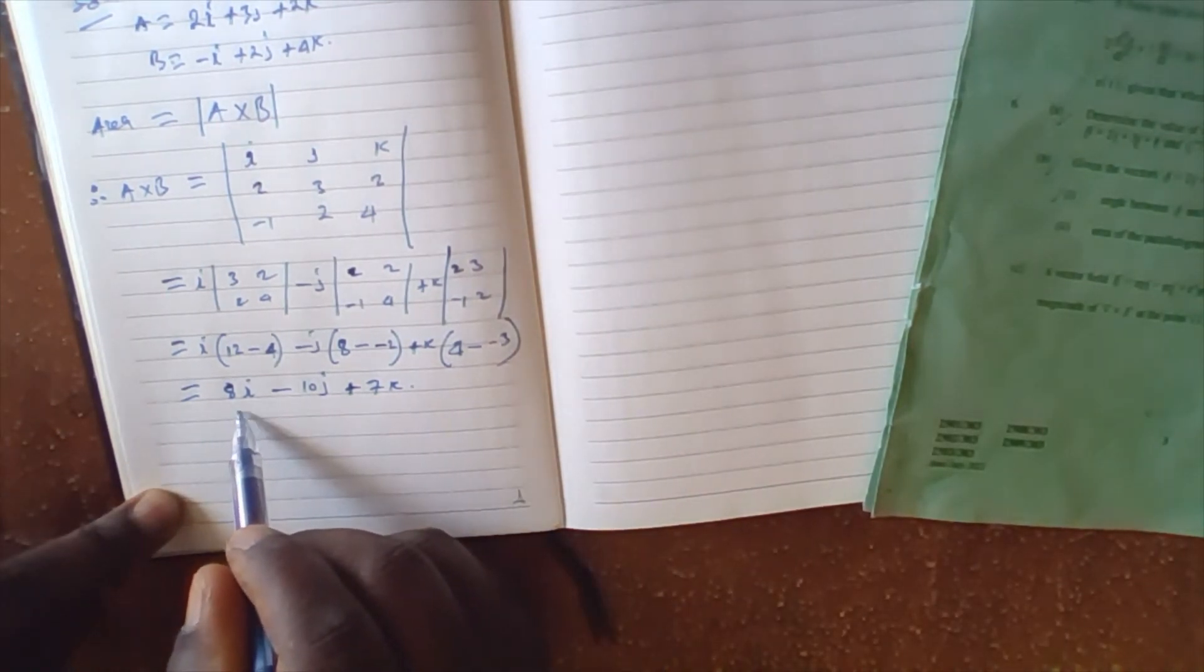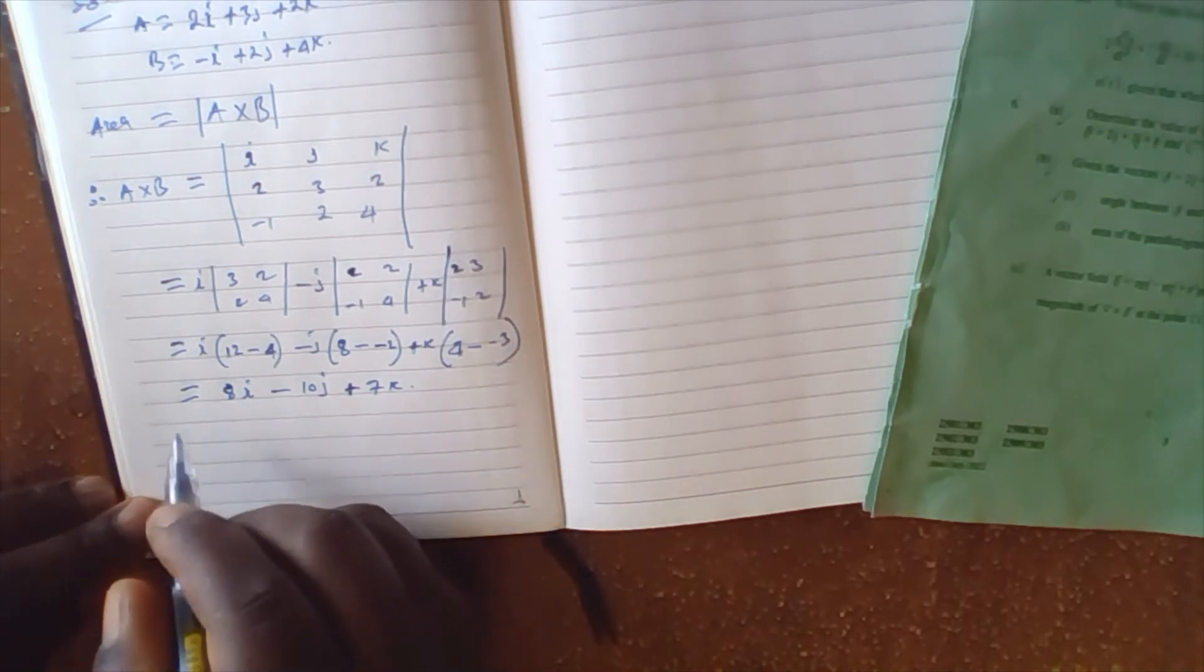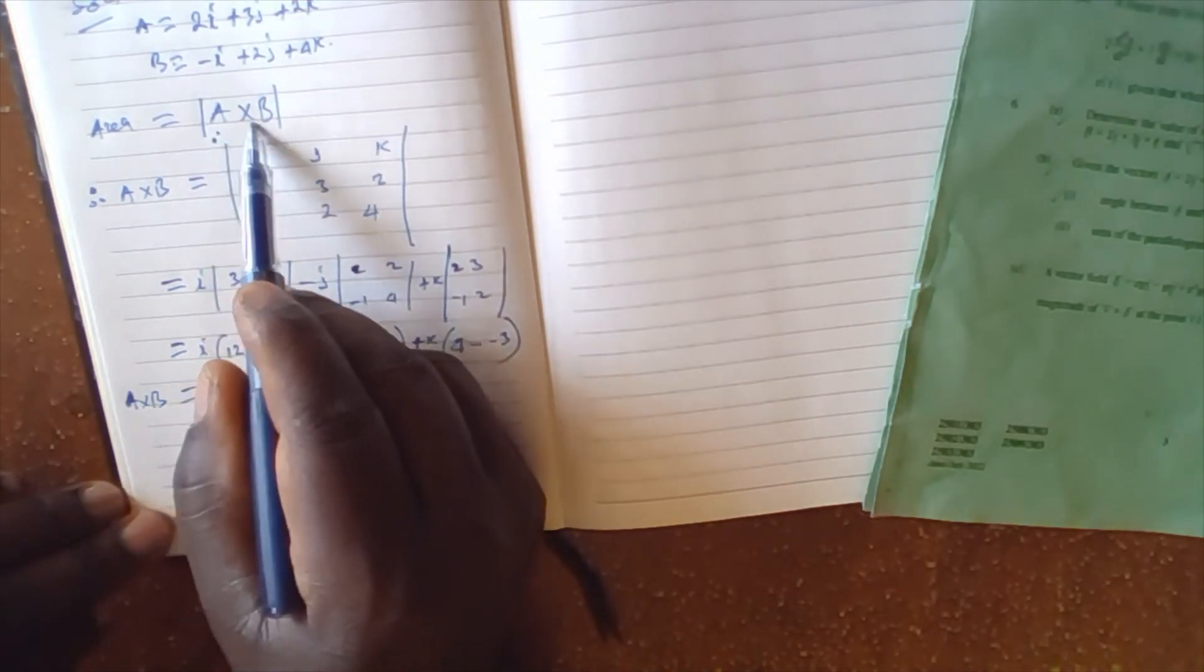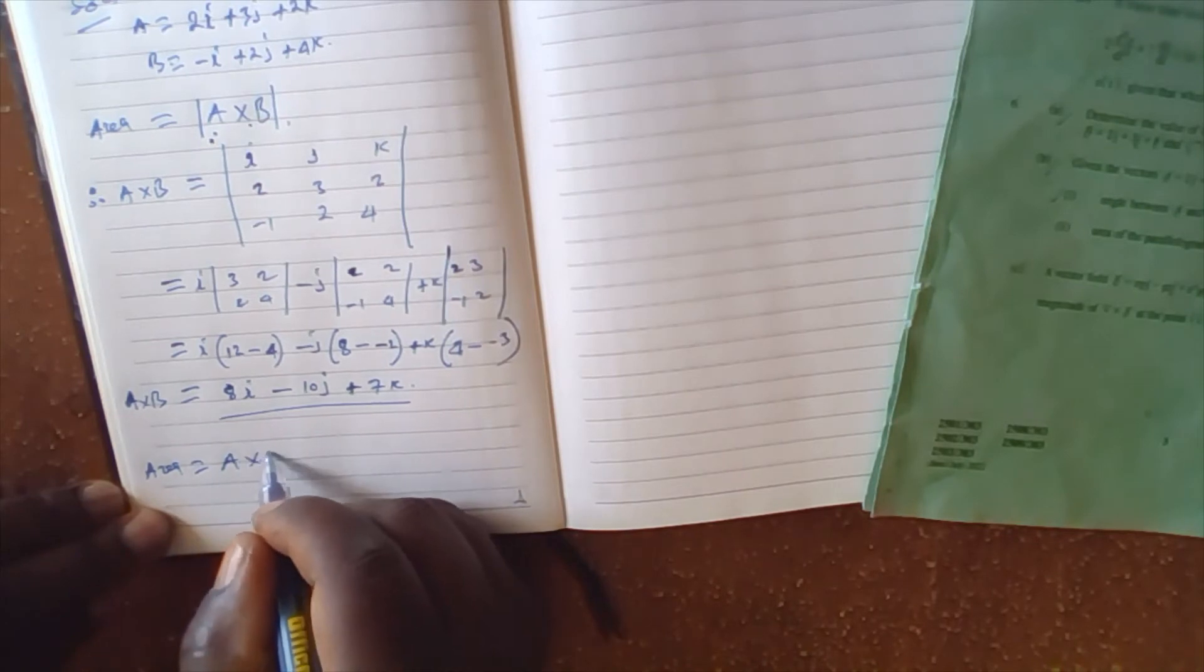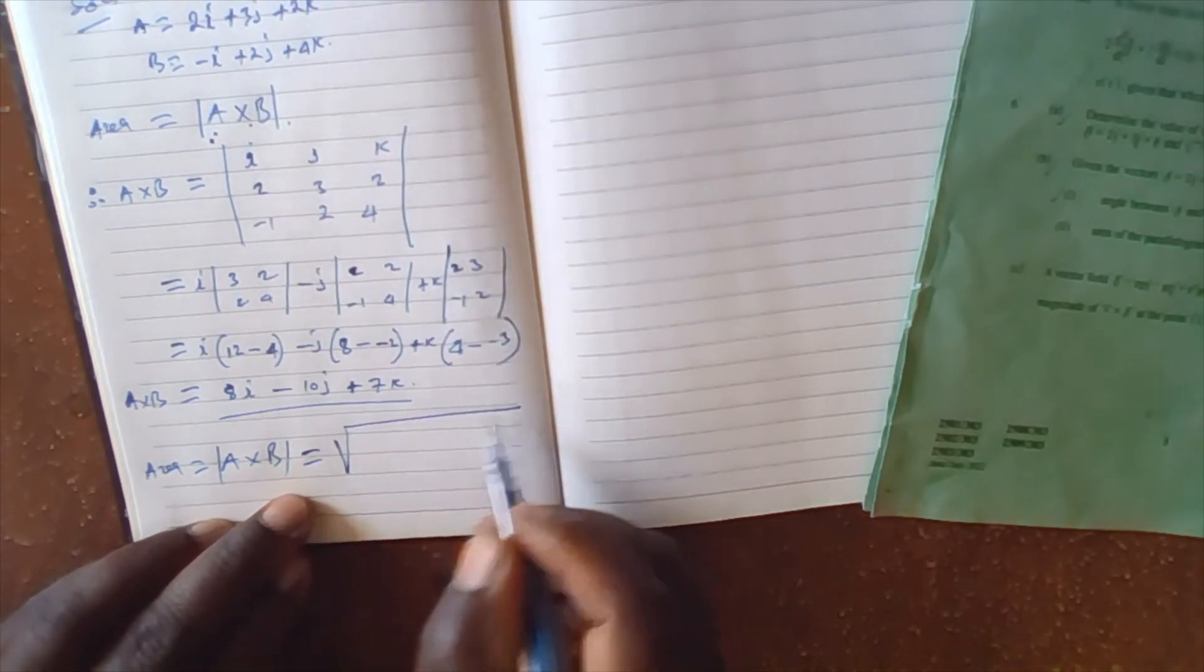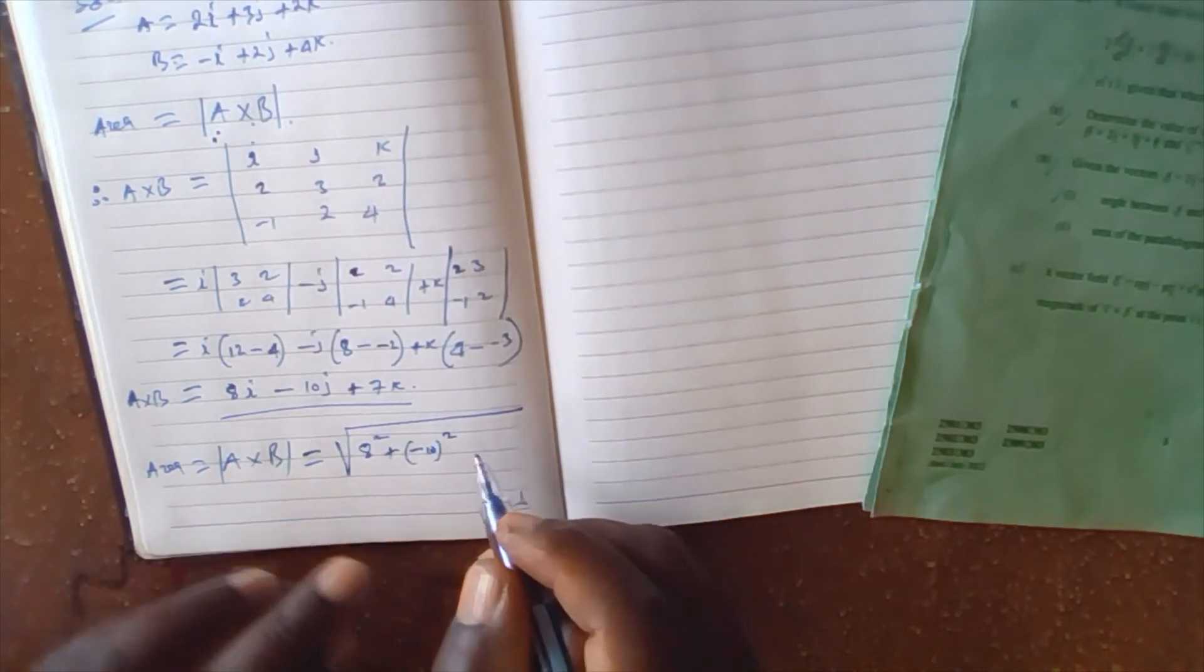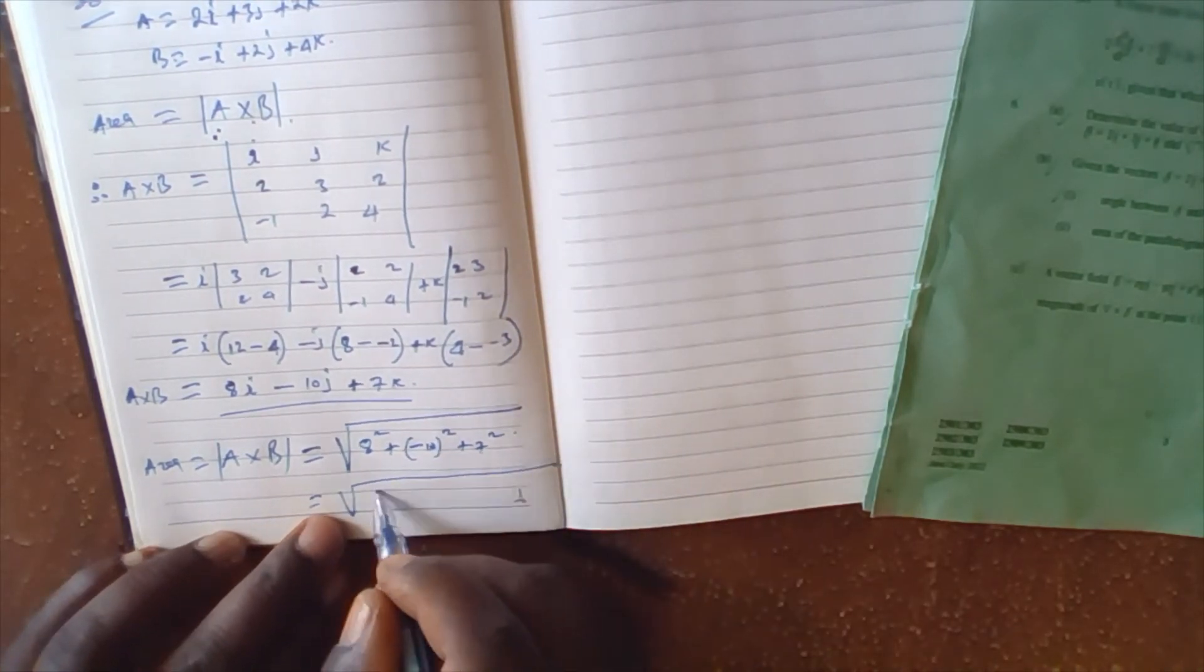So a cross b equals this, and then to get the area we get the modulus of a cross b. So area would be equal to the modulus of a cross b, which equals the square root of 8 squared plus negative 10 squared plus 7 squared.